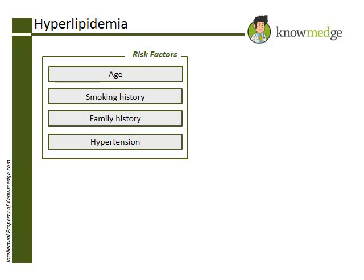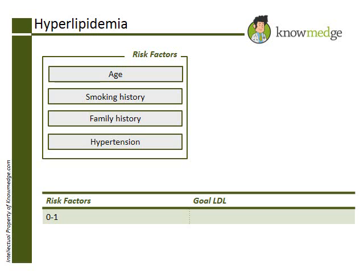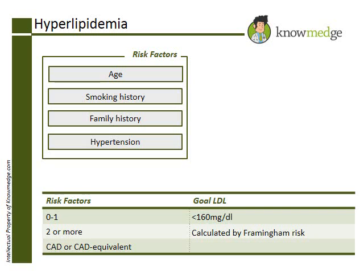Individuals who have zero or only one risk factor require a goal LDL less than 160. With two or more risk factors, you have to calculate a more specific Framingham risk to determine their goal LDL. Patients who have coronary artery disease or CAD equivalents require an LDL less than 100 and ideally less than 70.